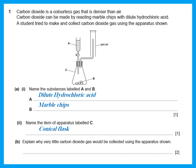Explain why very little carbon dioxide gas would be collected using the apparatus shown. This apparatus is wrong to use. Carbon dioxide is a colorless gas that is denser than air, and if a gas is denser than air, you should not collect it by upward delivery — that is wrong. You should collect it by downward delivery.